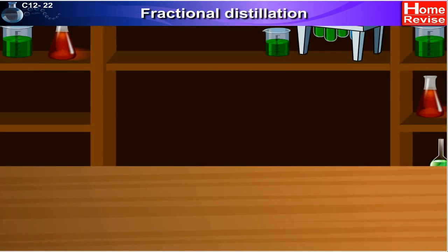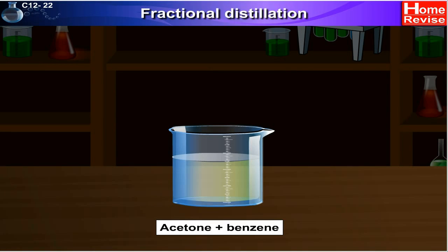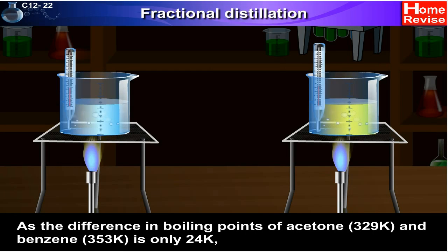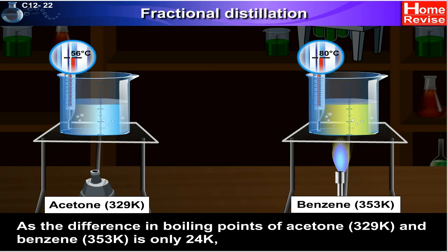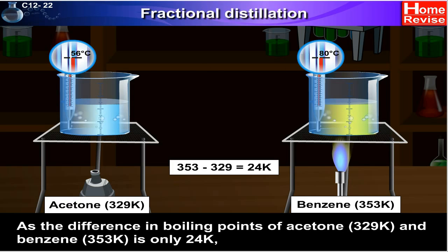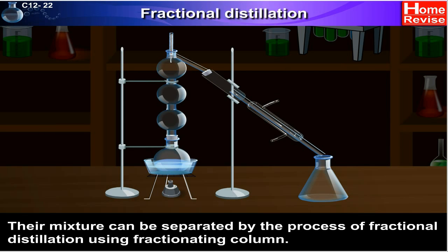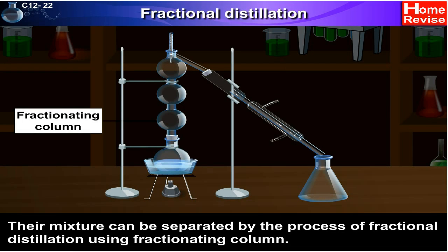Let's take an example: separation of acetone and benzene by fractional distillation. As the difference in boiling points of acetone, whose boiling point is 329 kelvin, and benzene, whose boiling point is 353 kelvin, is only 24 kelvin, their mixture can be separated by the process of fractional distillation using a fractionating column.